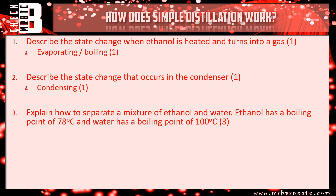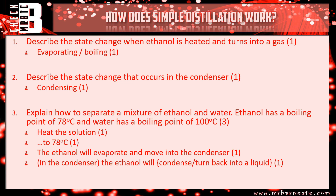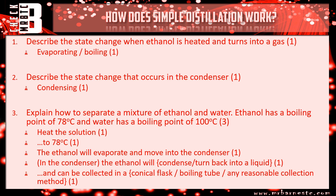Number three — explain how to separate a mixture of ethanol and water. First, you heat your mixture. What temperature do you go up to? 78 degrees — the lowest boiling point. As soon as you've done that, your ethanol will evaporate and move into the condenser. In the condenser, that ethanol will condense or turn back into a liquid. Finally, collect it in a conical flask, a boiling tube, or anything similar — that would get you a mark. There are five possible points there and you need any three of them.